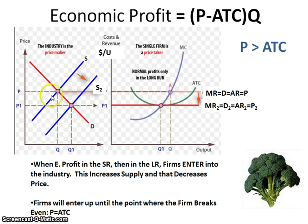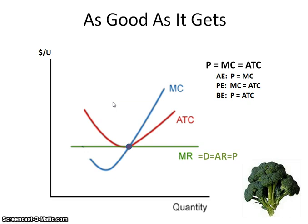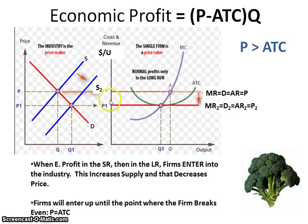Looking at this situation, you have supply and demand intersecting, giving you a price at P. The firm is a price taker, so it takes the price from the industry. Marginal revenue equals demand equals average revenue equals price at this point. Where marginal revenue equals marginal cost gives you the profit maximizing output. At that output, price is greater than ATC — that's the per unit economic profit. For total economic profit, you do price minus ATC times quantity, which is this whole rectangular area shown here.